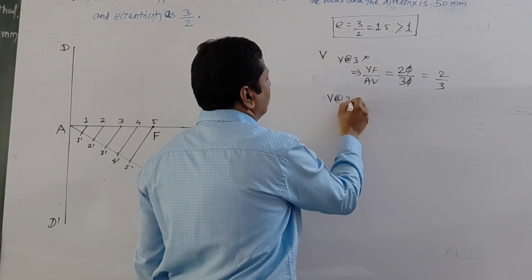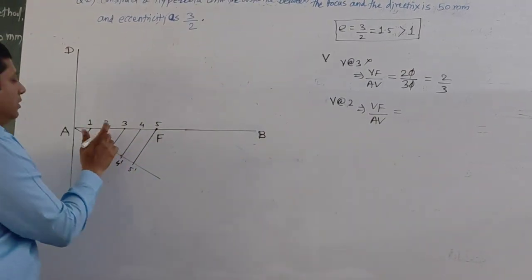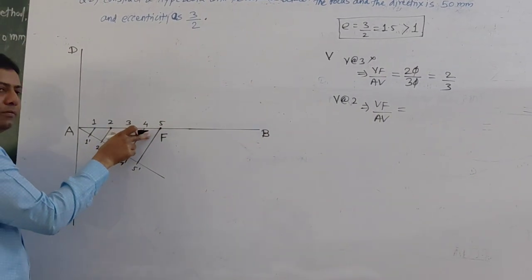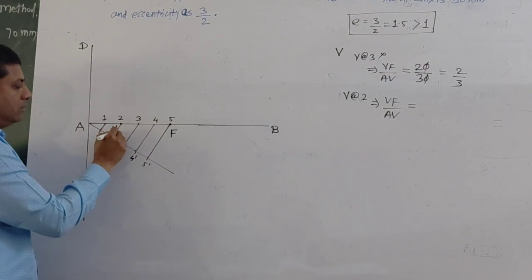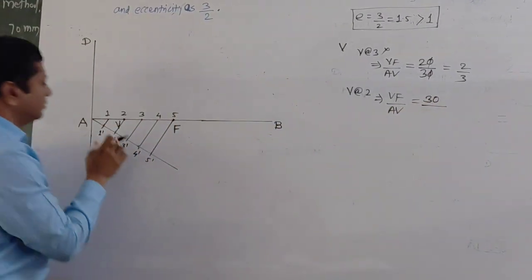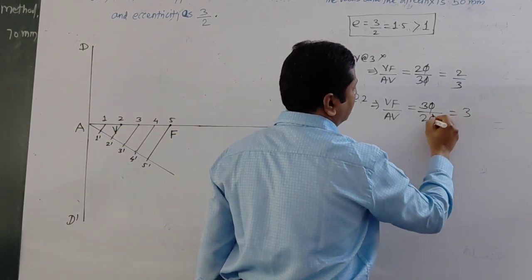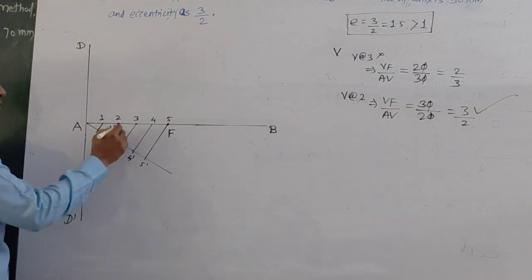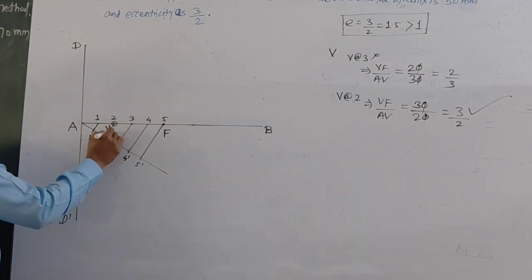Now consider V at point 2. If V is at point 2, then VF = 30mm and AV = 20mm. So VF upon AV = 30 divided by 20, which equals 3 by 2 — this satisfies the eccentricity condition. So locate V at point 2; this is our vertex.